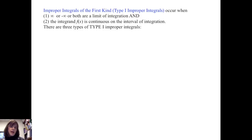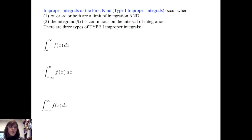Improper integrals of the first kind occur when, first, infinity or negative infinity or both are limits of integration, and second, the integrand f of x is continuous on the interval of integration. There are three types of type 1 improper integrals. The first: we integrate from d to infinity of f of x dx. The second: we integrate from negative infinity to e of f of x dx. And in the third case, we have both negative infinity and infinity as the limits of integration.